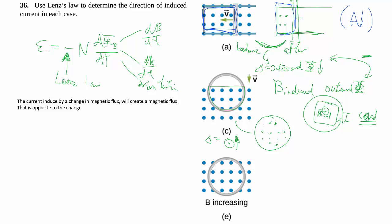So the change here is the outward flux goes up. There's more outward flux as time goes on for a little bit until it fully gets inside and stays the same. So here's the negative sign so then the B induced has to counteract that. So to counteract an increase in outwards we must make something that goes inwards to cancel out some of that extra outwards.